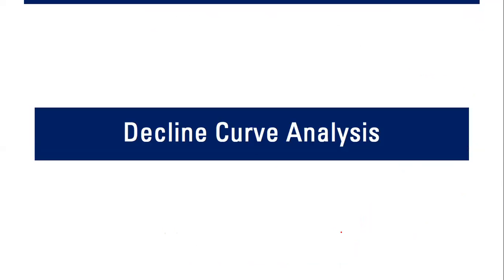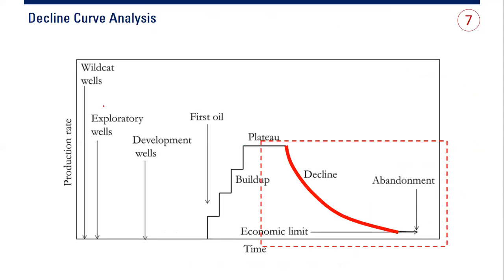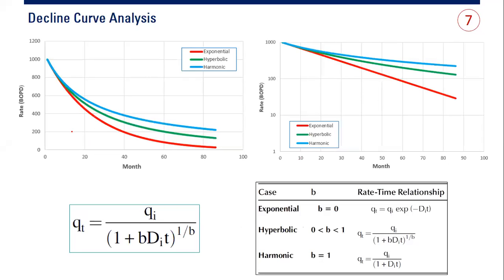What is also important is decline curve analysis for production forecasting. This is the life cycle of our software: we start from exploration, the development, and then we start producing — first oil, build-up period, and then plateau. From the end of plateau, we start production decline. In this time interval we can do decline curve analysis to forecast our production. This is the main responsibility of the reservoir engineer.